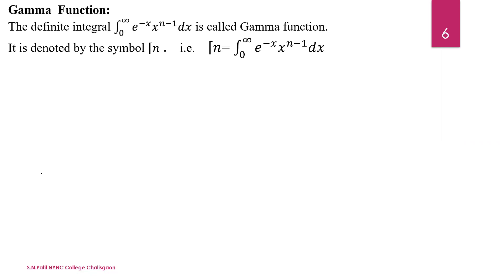The property of the gamma function we will prove is: gamma of 1/2 is equal to the square root of pi. We will now prove this result.